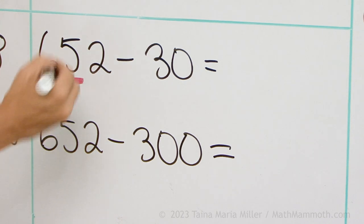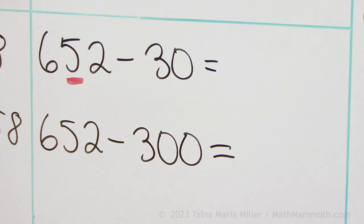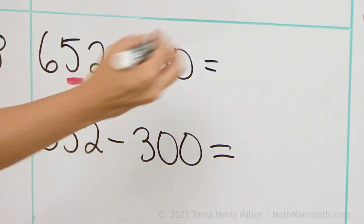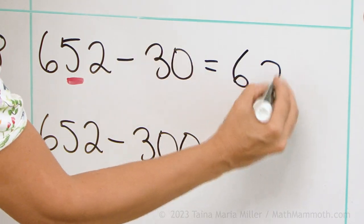And from 5 tens you take away 3 tens, leaving 2 tens. And these other digits don't change, 6 and 2 tens and 2.